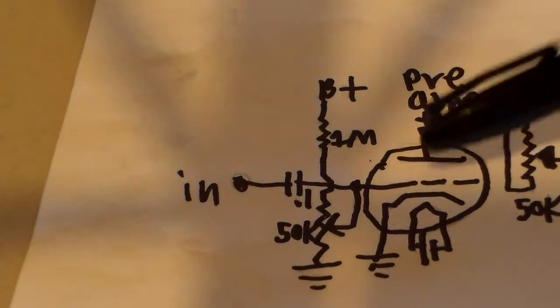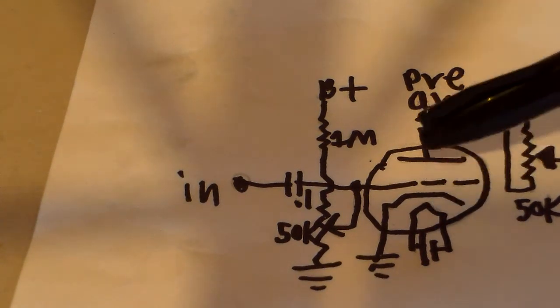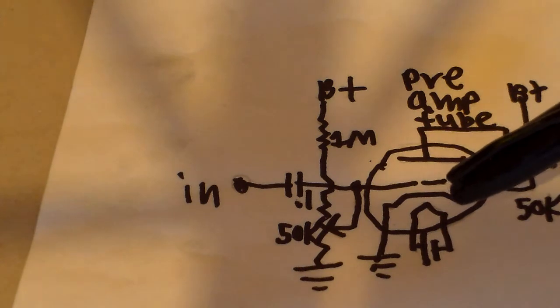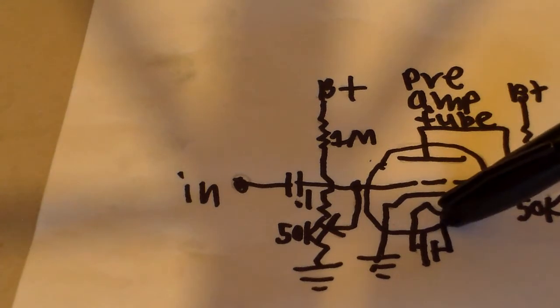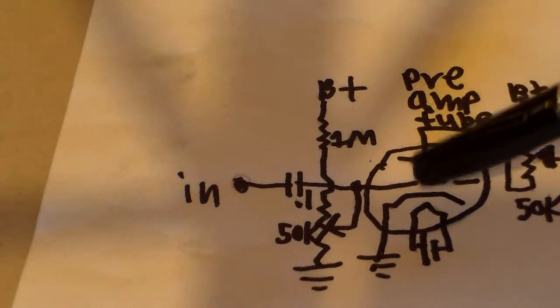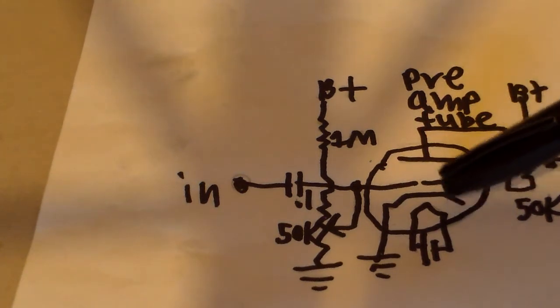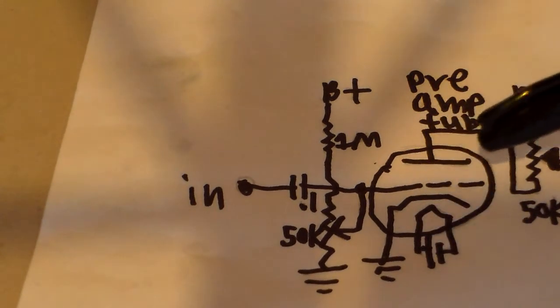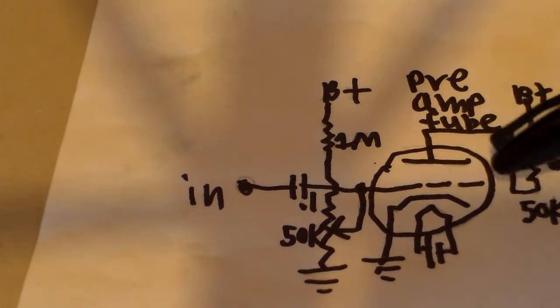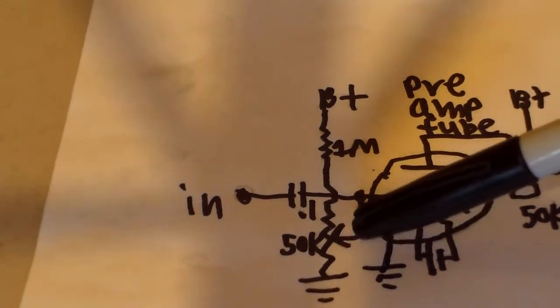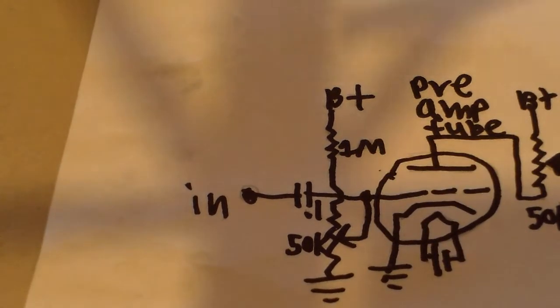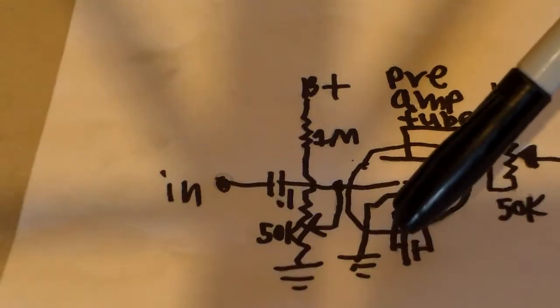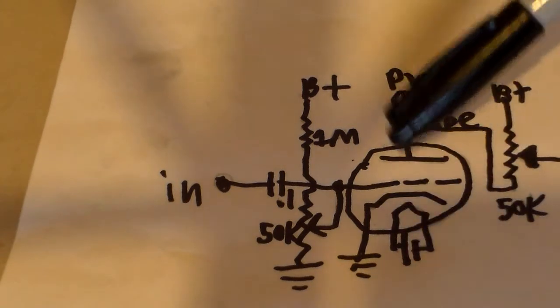And what tubes have is they have a cutoff voltage, and that is when the grid is almost to or equal to the potential of the cathode. And when that happens, no electrons flow from here to here to the plate. So no current is flowing through the tube. And what these resistors and potential operators do is they can adjust that so that the tube is operating very far or very near that cutoff point.